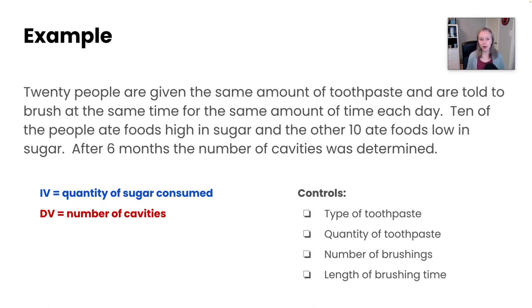So that summarizes what variables are. You should now know independent, dependent, and control variables and be able to identify those in a scientific question.